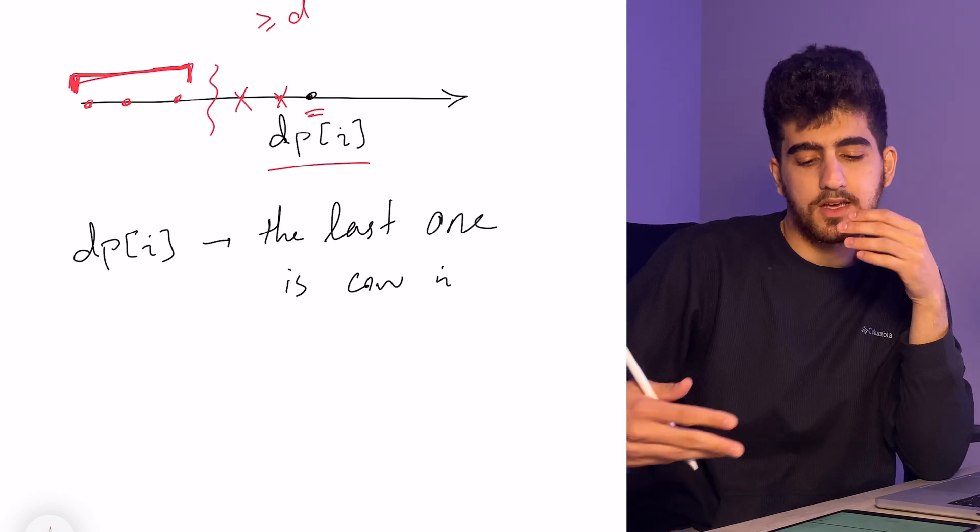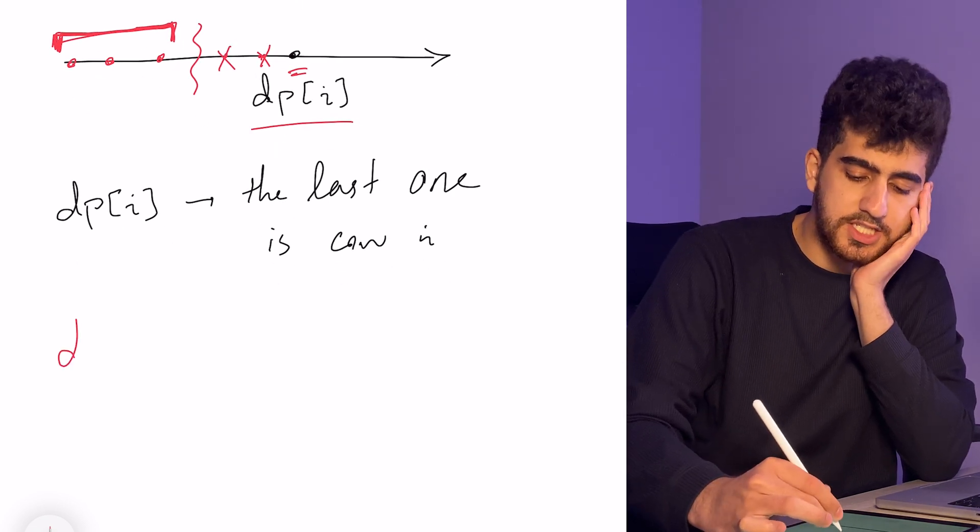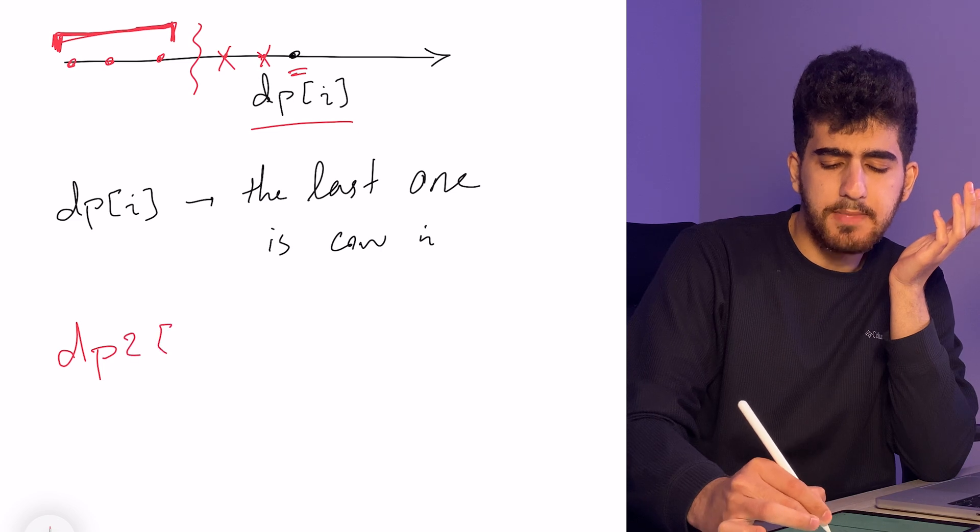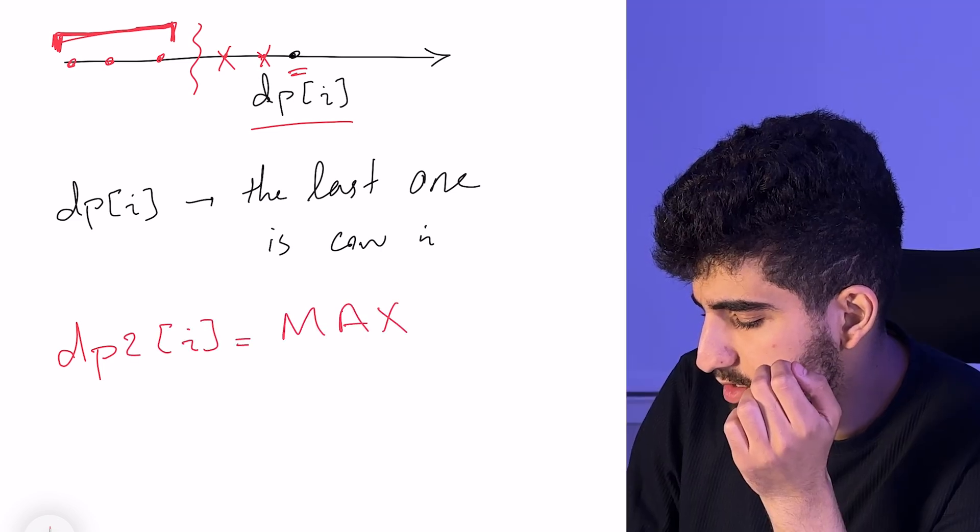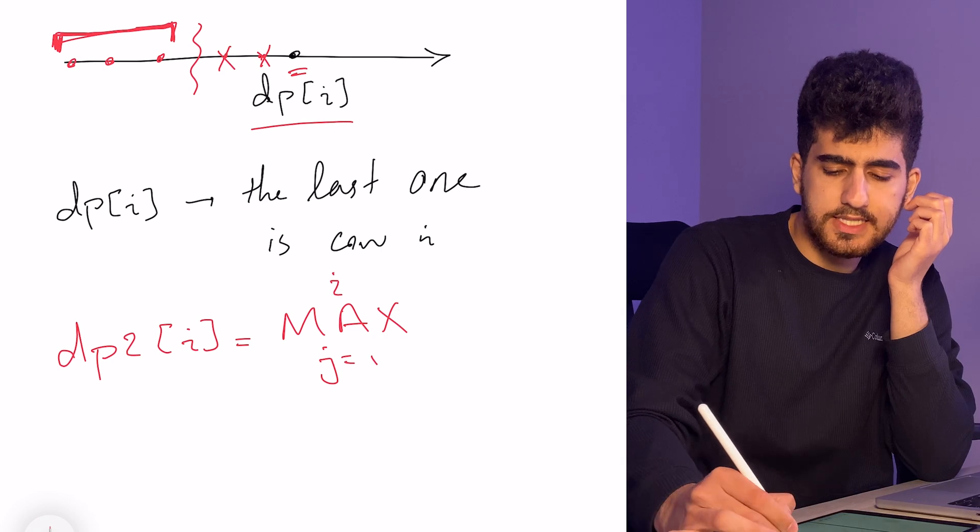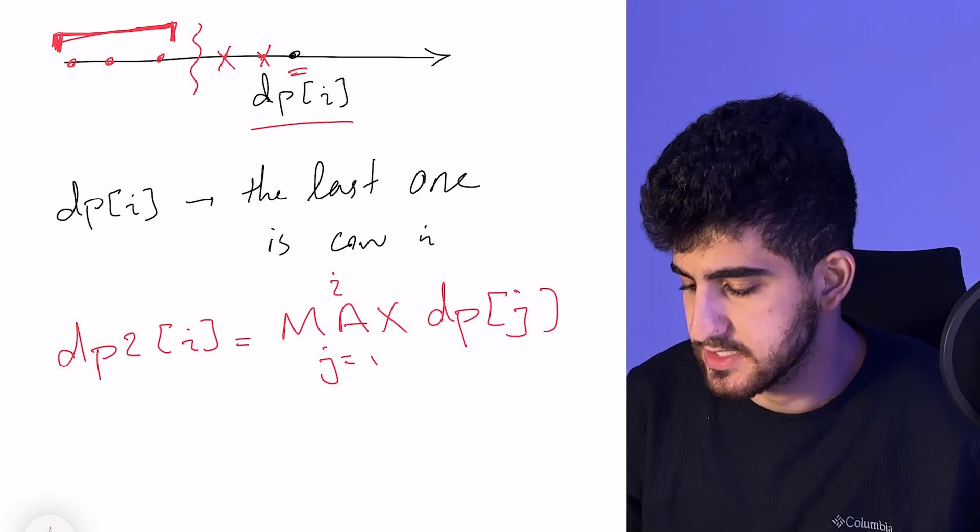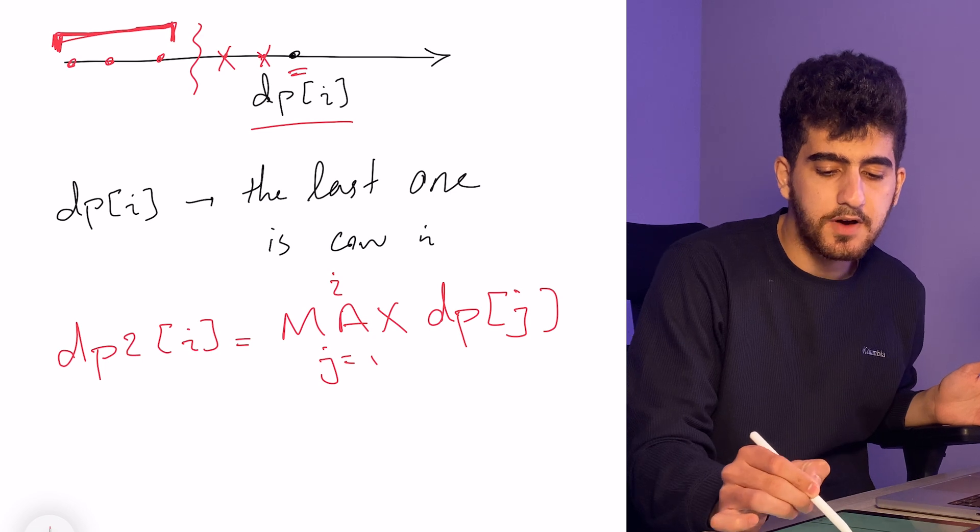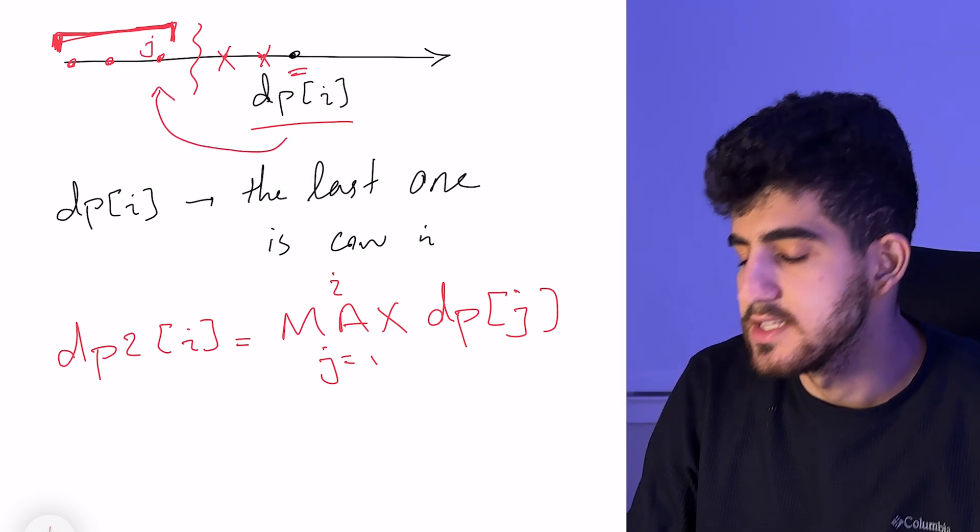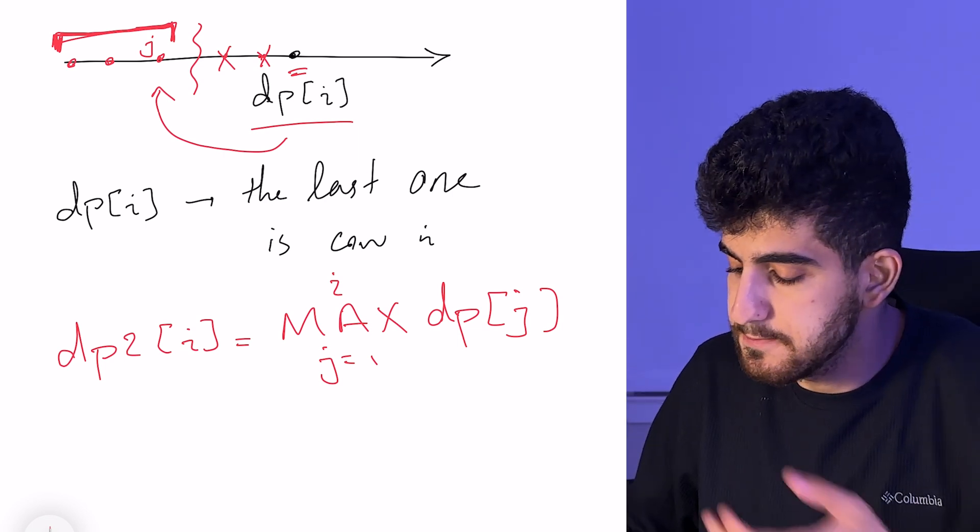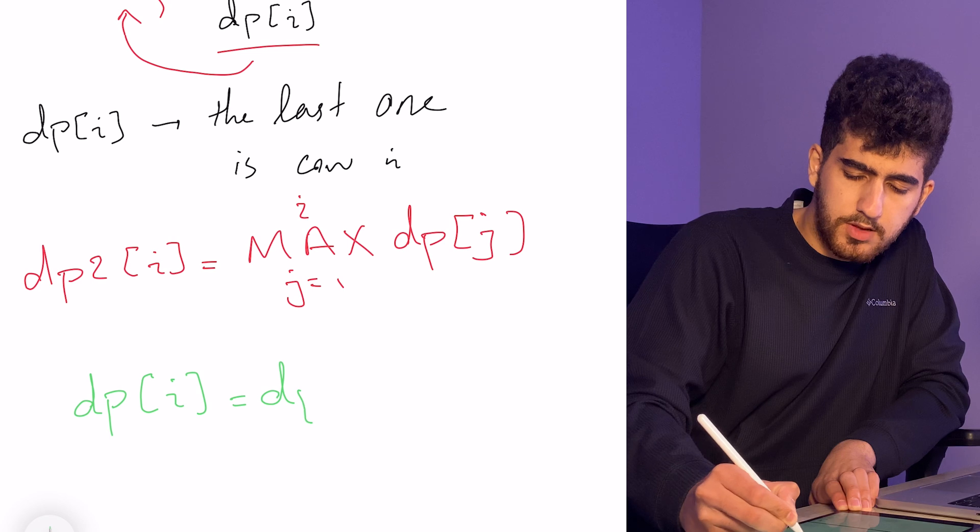In order to do that, I can again have another dp, for example dp2. Such that dp2 of i is the maximum of all the dps, maximum j from 1 to i, dp of j, that keeps the maximum of the prefix. And I can say that then dp of i is going to be dp2 of this j, which is the last cow that its distance to i is greater or equal to d. So my dp of i will be dp2 of j plus one.